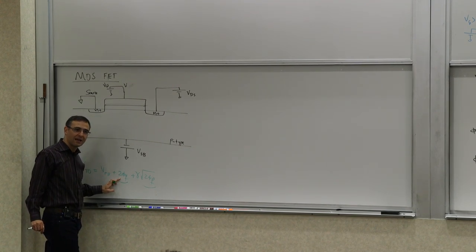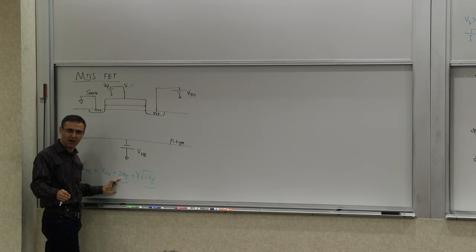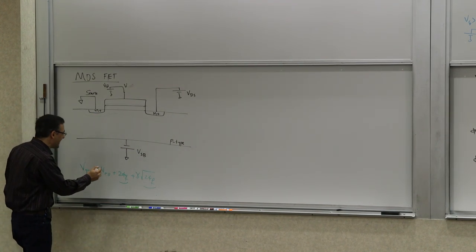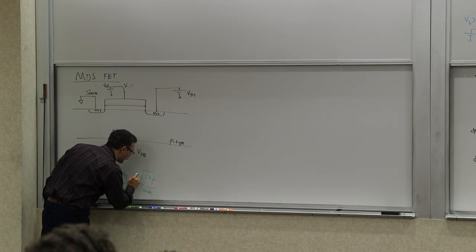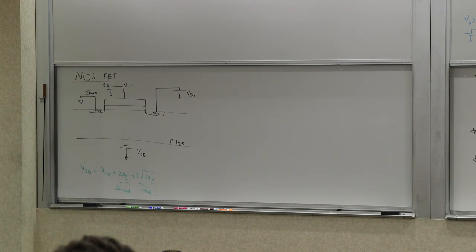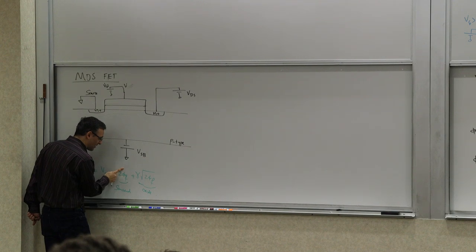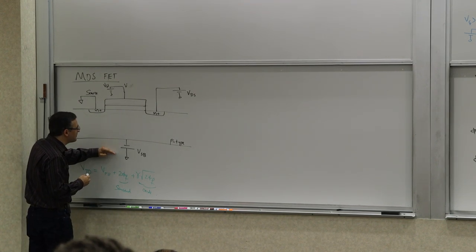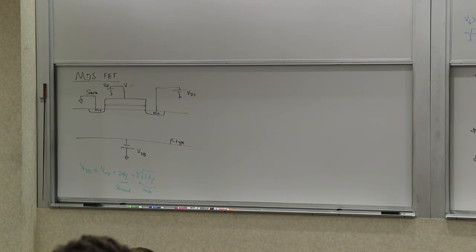Strong inversion is defined such that the surface potential makes the density of charge carriers on the surface the same as in the bulk but of the opposite kind. That means you go φ_F to reach the intrinsic level E_i, then another φ_F to invert — so 2φ_F is the semiconductor part, and γ·√(2φ_F) is the oxide part. Now, if you have a VSB — a source-to-bulk voltage — would that affect the threshold voltage? And how?